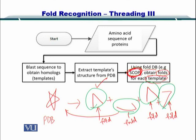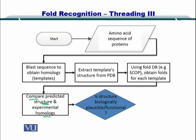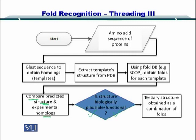What we do with these folds is as follows. We compare the predicted structures — that is, the folds — with the experimental homologs. Now, if the structure is functional and plausible, then you create a tertiary structure by combining these folds.